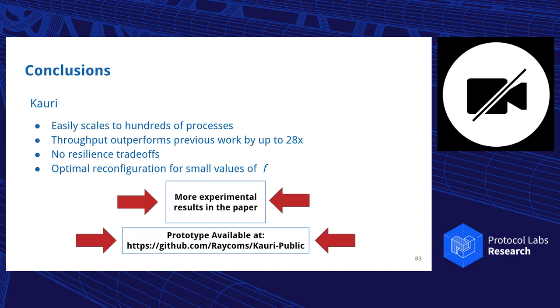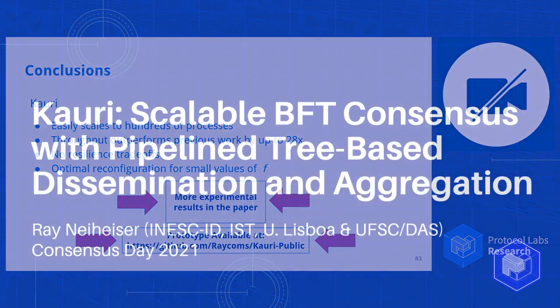So concluding, Kauri is able to easily scale to hundreds of processes in comparison to the state of the art. We outperform previous work by a factor of up to 28 in one of the scenarios. We have no resilience trade-offs and achieve optimal reconfiguration for a small value of F, which is arguably the most common case. There's many more experiments in the actual paper, and we also have a prototype available on GitHub if anyone is interested. Thanks everyone for listening, and I'll be happy to answer any questions.